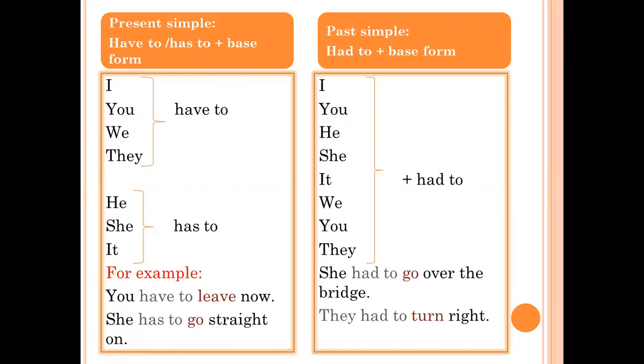So with the subject I, you, we, they, we write have to. And with the subject he, she, it, we write has to. For example, you have to leave now. So after have to, the verb leave comes in the base form without adding -s, -ing, or -ed.